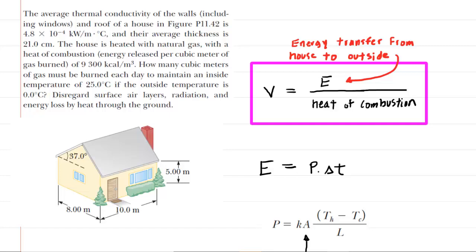In this question, we have to figure out the number of cubic meters of gas that needs to be burned every day to make an inside temperature of 25 degrees Celsius if it is zero degrees Celsius outside.